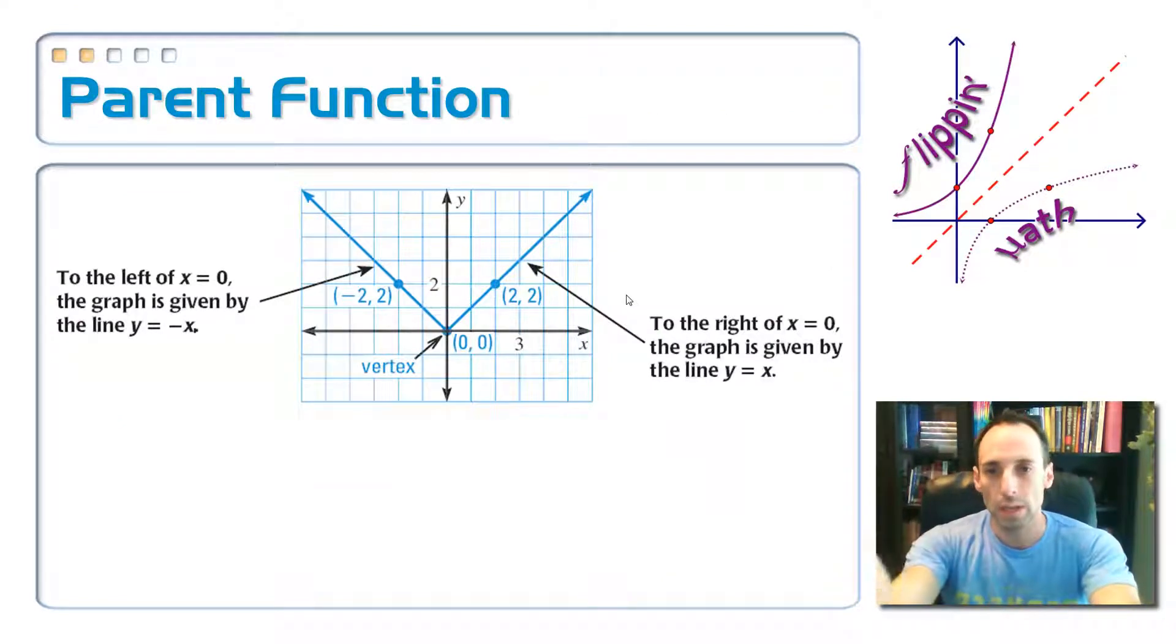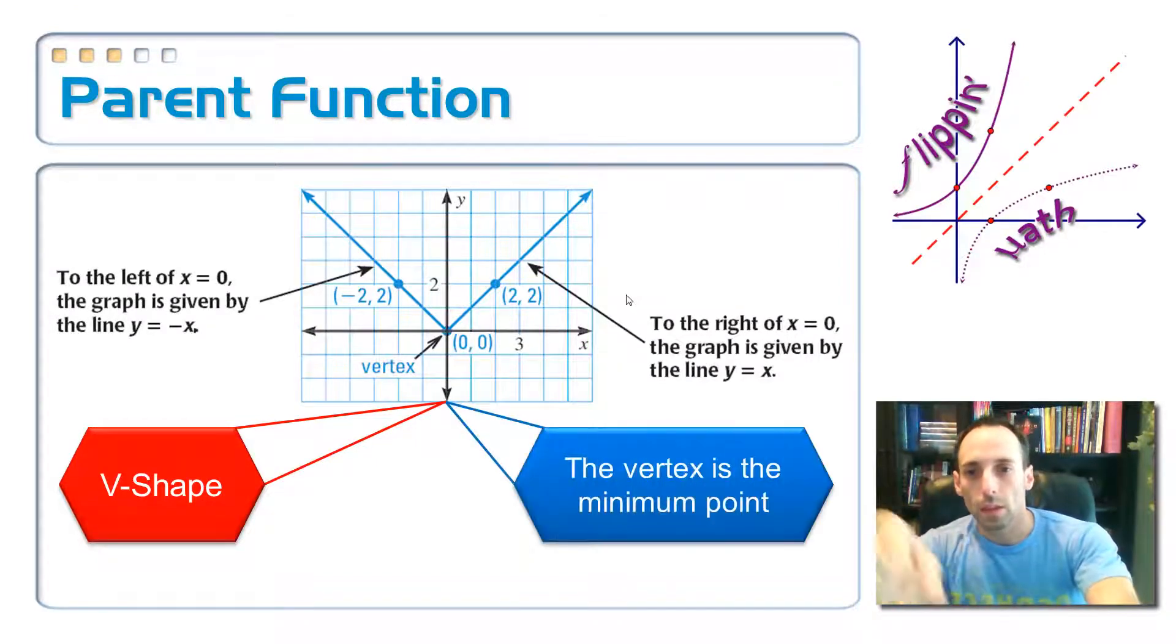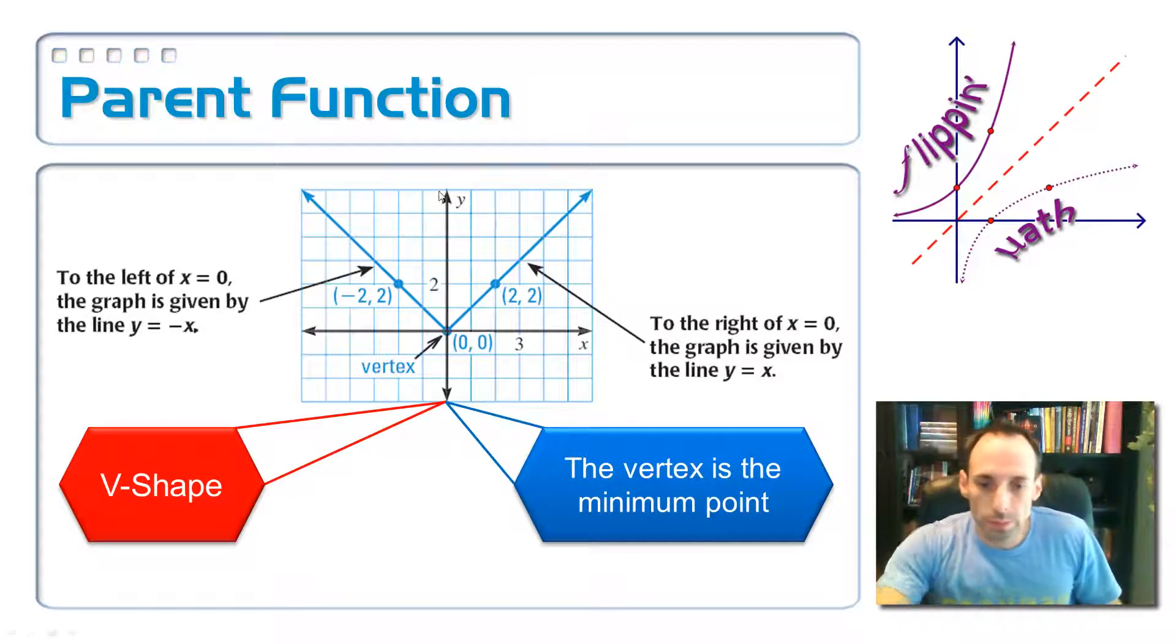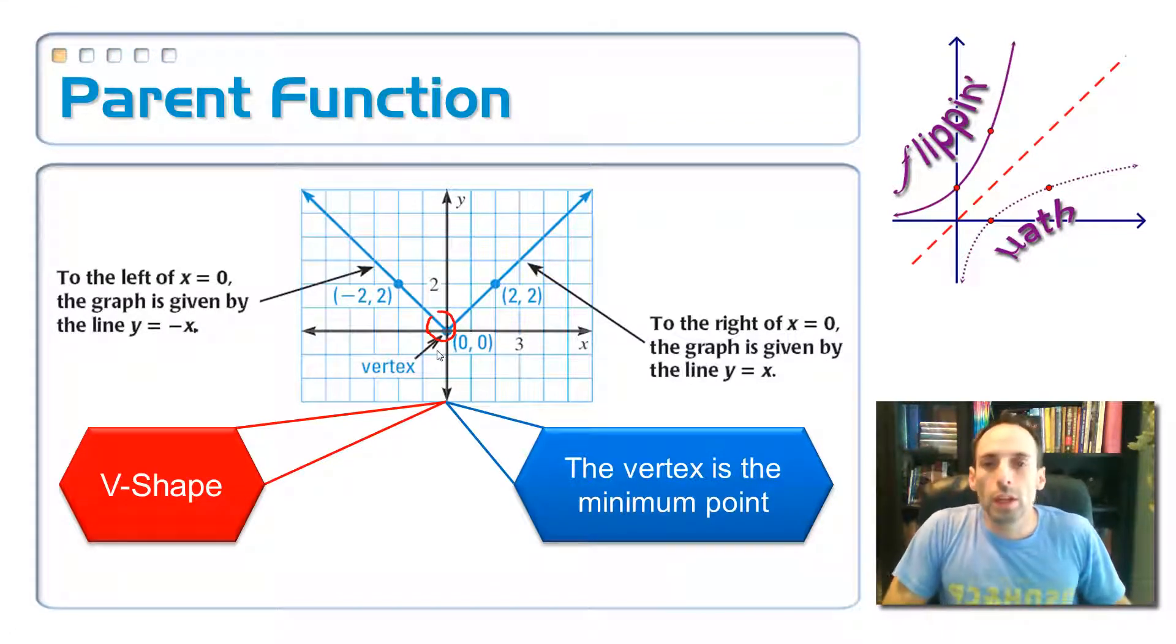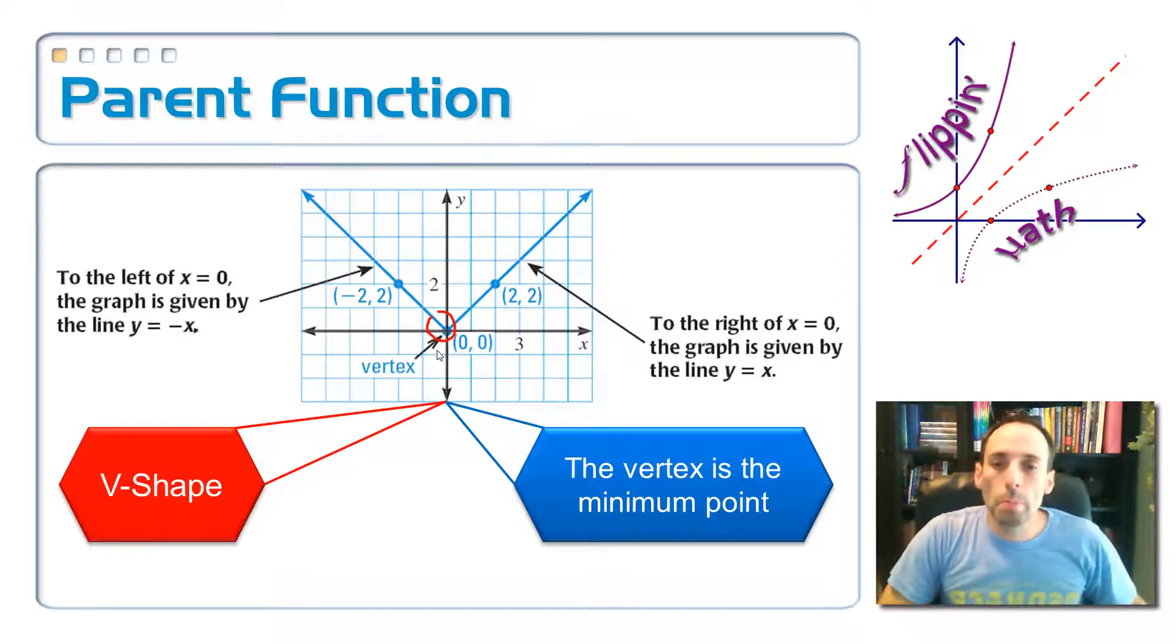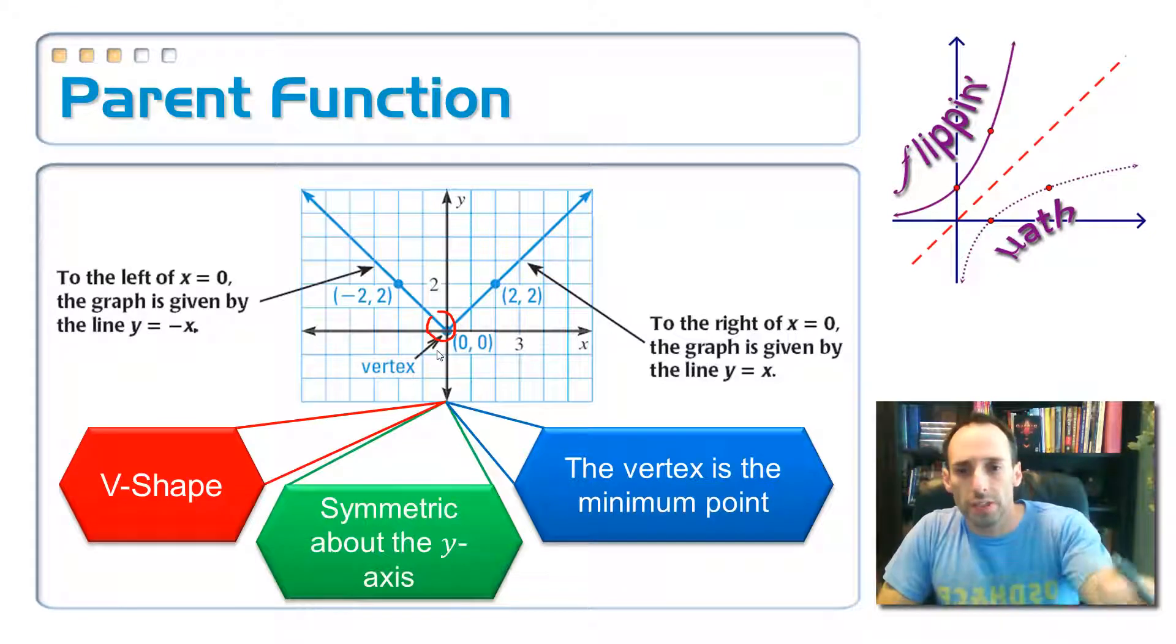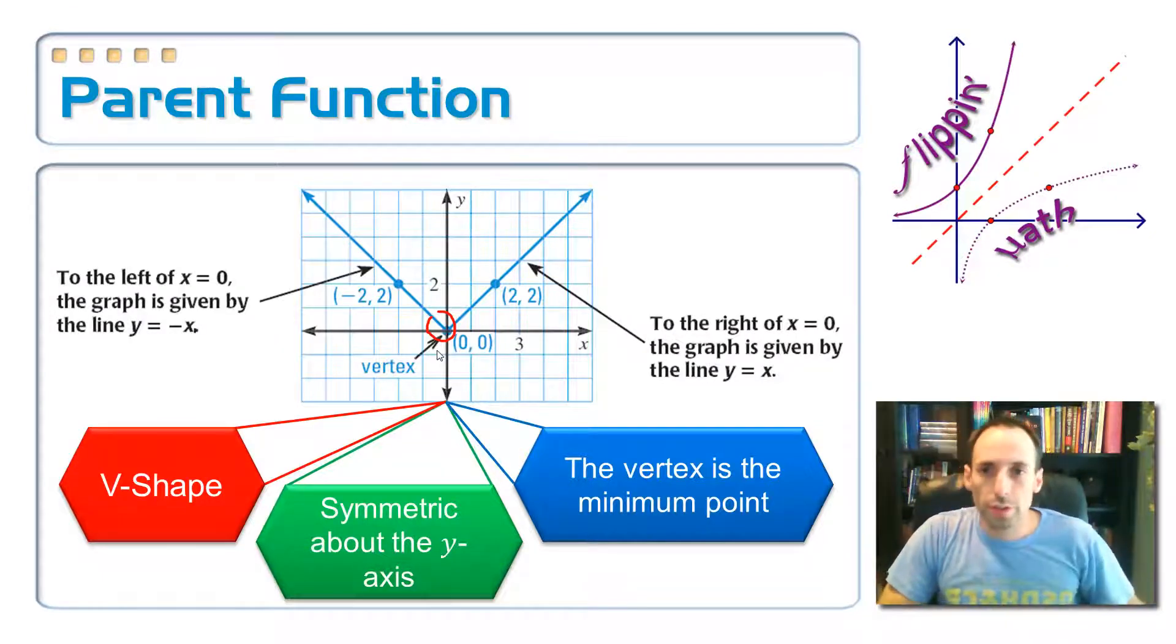So again, this V-shape makes the absolute value parent function. So the point right there, the point at the very bottom, mark it here, that's the vertex. It's the minimum point. You might be used to seeing a vertex on a parabola. It's the same kind of thing. It's like a turning point. But here, it's a very sharp corner instead of a parabola being a smooth one. So that's a minimum point for this graph. And the vertex is at 0, 0. That vertex is at 0, 0 for the parent function.